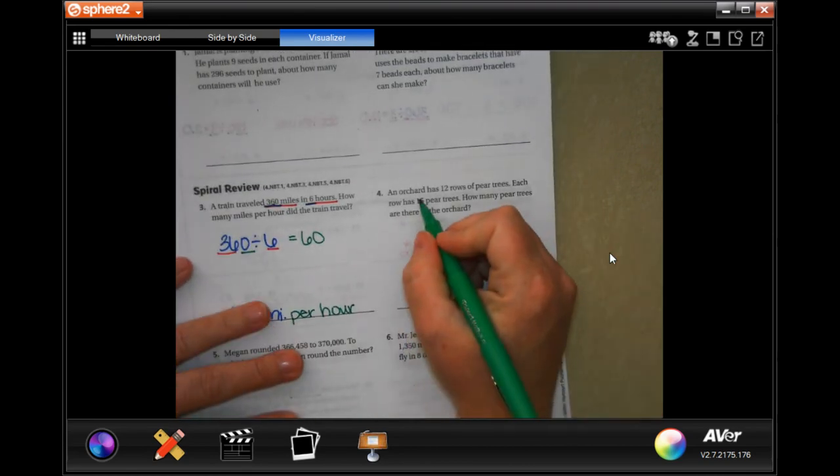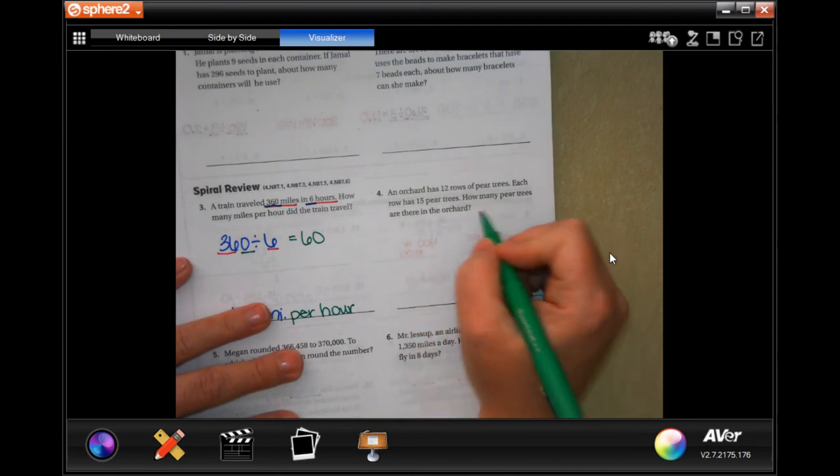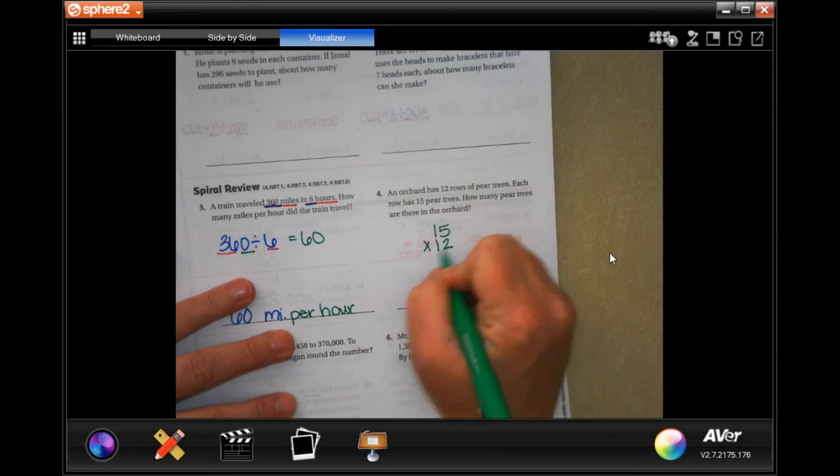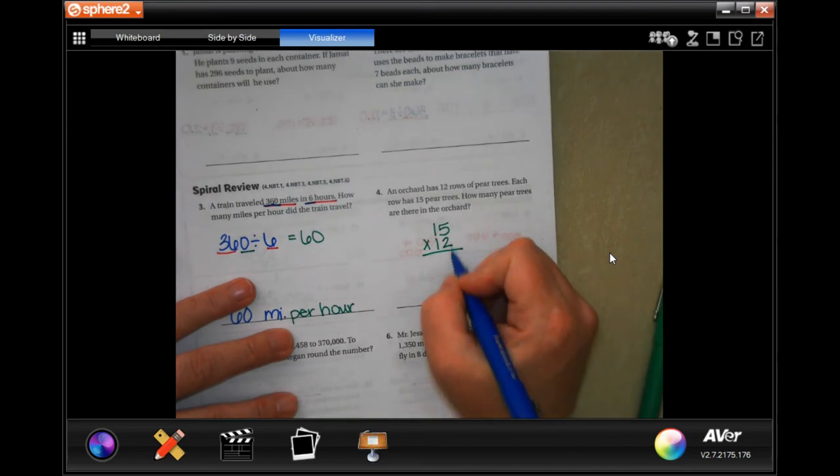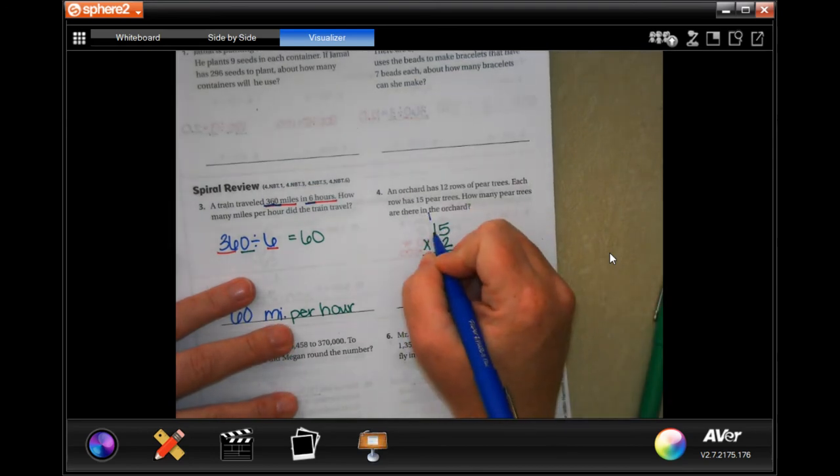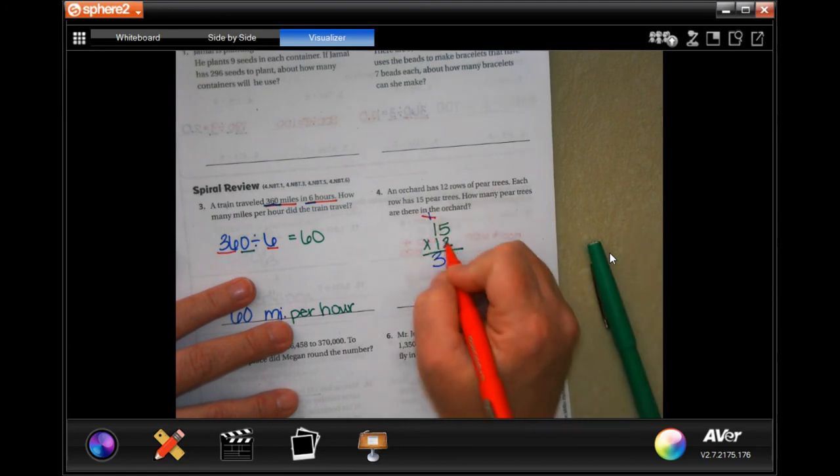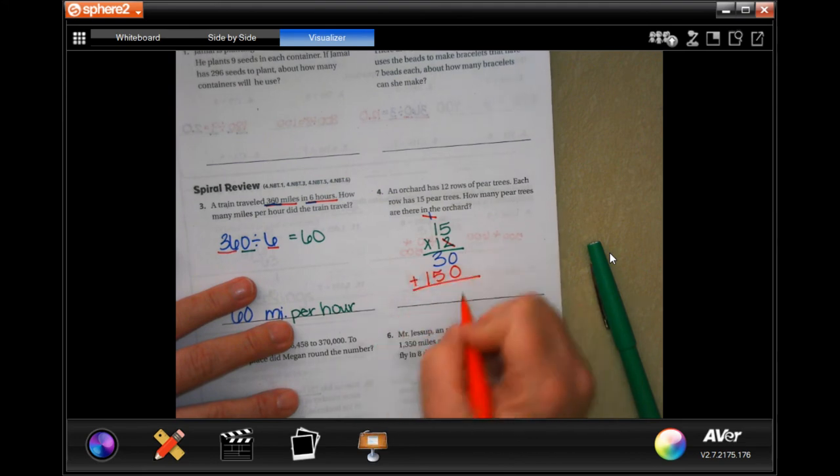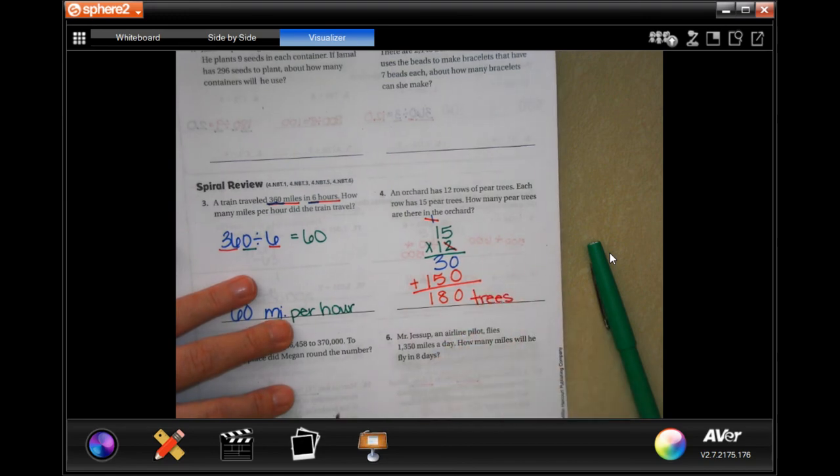All right, an orchard has 12 rows of pear trees. Each row has 15 pear trees. How many pear trees are there in the orchard? So 15 times 12, pretty easy, guys. 5 times 2 is 10. Carry that 1. 2 times 1 is 2, plus 1 is 3. We're going to go through and tick, tack, toe, and 1 times 15 is 15. Add those up. 0, 8, 1, trees, 180 trees, guys.